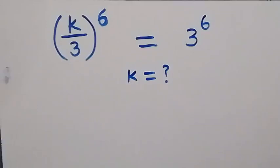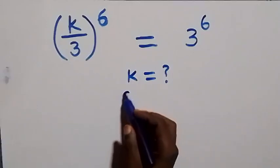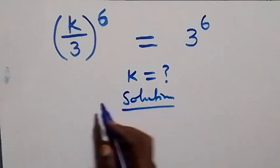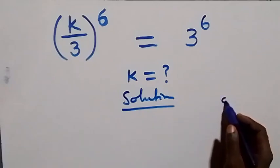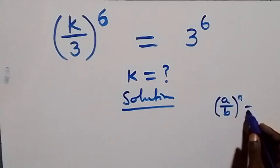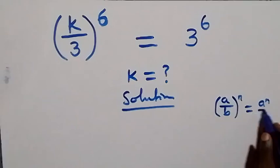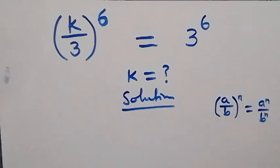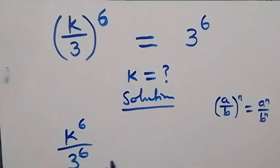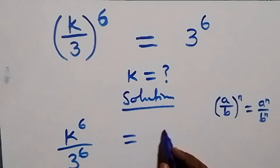Hello, you are welcome. How to solve this nice exponential equation. This follows from the law of indices: when we have (a/b) raised to power n, which is the same thing as a raised to power n over b raised to power n. That is, the same thing as k raised to power 6 over a raised to power 6, which is equal to 3 raised to power 6 on this side.